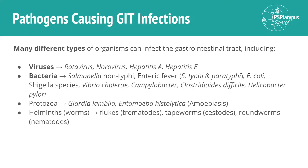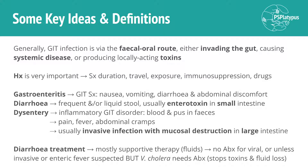Diarrhea is frequent and/or liquid stools, and that's usually due to enterotoxins — toxins produced by bacteria — and usually happening in the small intestine. Comparing that to dysentery, which is an inflammatory gastrointestinal disorder with more alarming findings: blood and pus in the feces. It presents with similar findings, but also diarrhea plus blood and pus, along with pain, fever, and abdominal cramps.